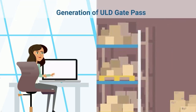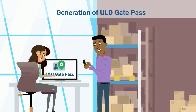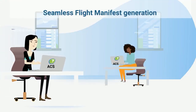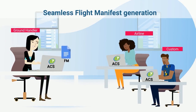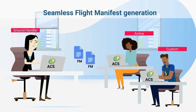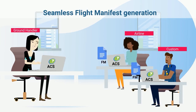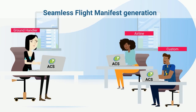After generating the ULD gate pass online, generation of the flight manifest is made seamless with the Cargo Community System. Through the smart interface, ground handlers can generate flight manifest online and submit it to airlines and customs. In short, a process which consumes a significant amount of time is made seamless.